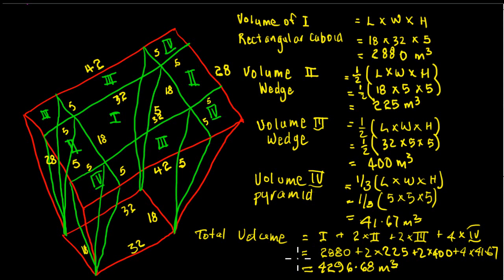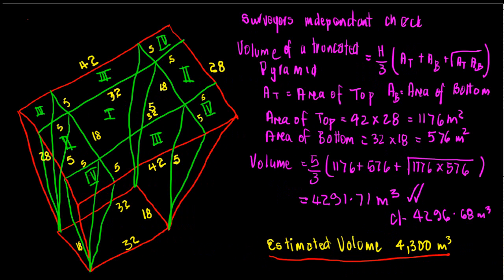So we'll move on, roughly around 4,300 cubic meters is probably what I would go for under these circumstances. But let's give it the good old surveyor's independent check. So here we are, and we know that the actual regular shape that we've got there is what we call a truncated pyramid, or the frustum of a pyramid.